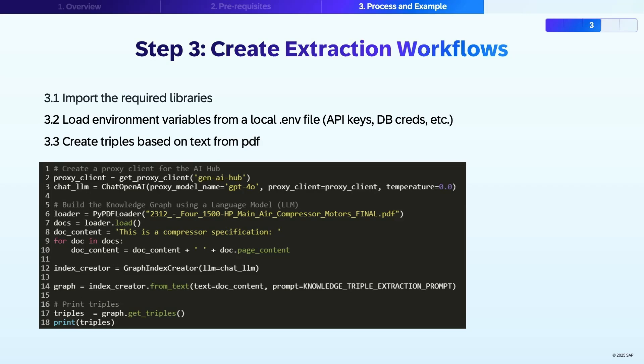The next practical question is how to turn real documents into knowledge graph triples. We download a PDF file, extract its content, and concatenate all pages into a single string. Then we use the prompt from step one with a large language model via AI Core to extract the triples from this content.